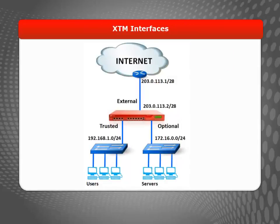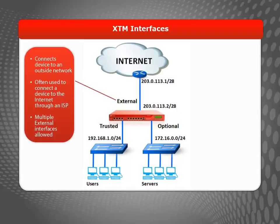In order to understand how to create policies, you should first understand the three security zones of your device, which are the external, trusted, and optional interfaces. An external interface is used to connect your device to a network outside your organization. Often, an external interface is the method used to connect your device to the Internet through your ISP, and you can have more than one external interface if you need.